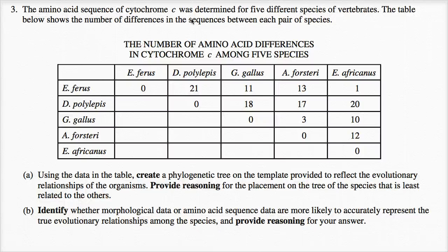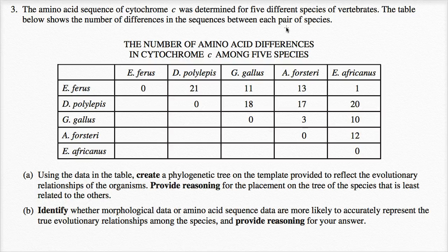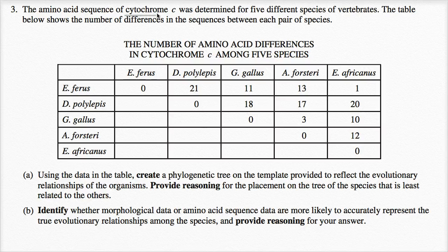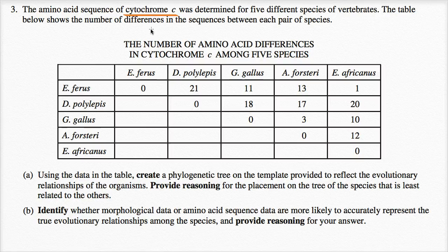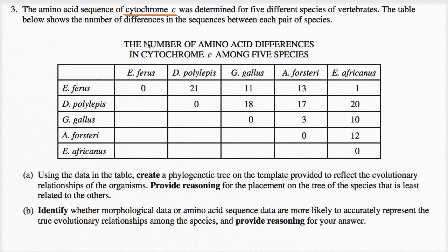The amino acid sequence of cytochrome C was determined for five different species of vertebrates. The table below shows the number of differences in the sequences between each pair of species. Just to give us some context for what we're talking about, we're talking about cytochrome C. This is a protein you might remember from when we studied the electron transport chain. You don't really have to know that for this question, but it's a protein that's found in a lot of different species, and we're going to compare the difference in the sequence of amino acids for that protein in the different species.